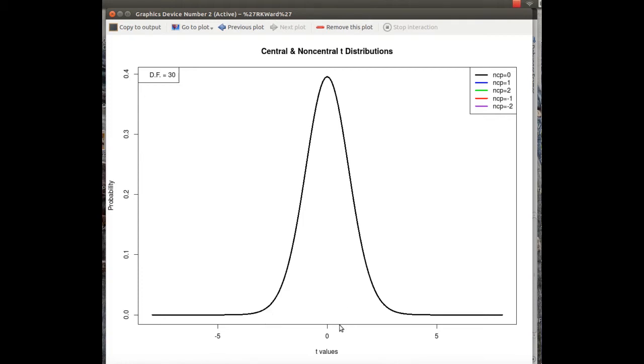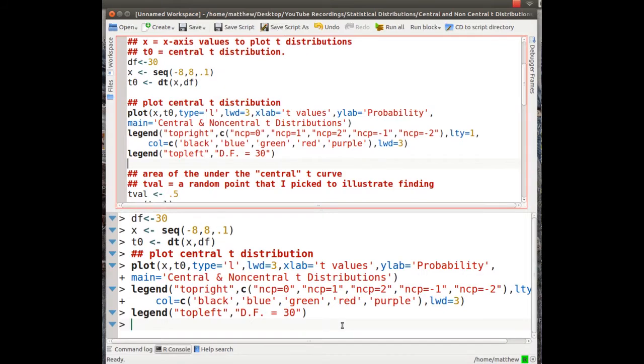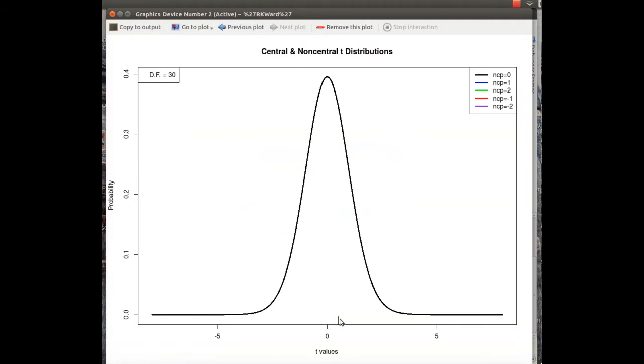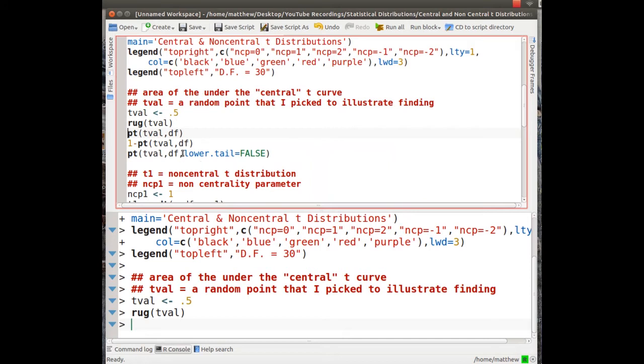For this illustration, we're not going to find that, but we'll just pick some value, say 0.5, and find area from that. So we just randomly pick 0.5. So now we want to find the area under the curve of the central t distribution.